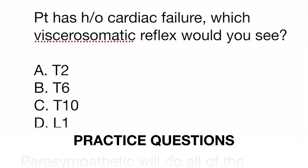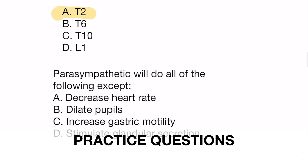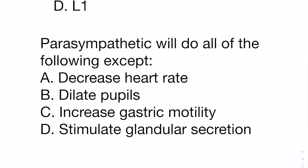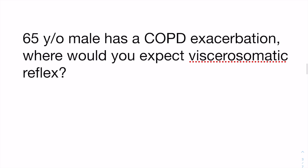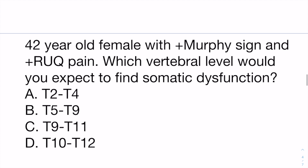Practice questions: A patient has a history of cardiac failure — which viscerosomatic reflex would you see? The heart is going to be T1 to T5. Next question: the parasympathetic system will do all the following except what? It will not dilate the pupils — that's the sympathetic system; all the rest are mediated by the parasympathetic system. A 65-year-old male has a COPD exacerbation — where would you expect the viscerosomatic reflex? That's going to be somewhere between T2 and T7. A 42-year-old female with a positive Murphy sign and right upper quadrant pain — which vertebral level would you expect somatic dysfunction? You identify it's talking about the liver, which is upper GI, so the answer is T5 to T9.